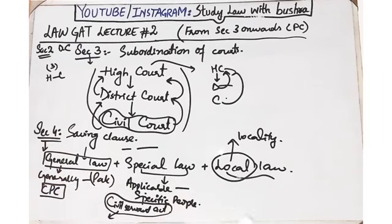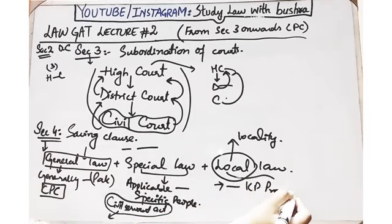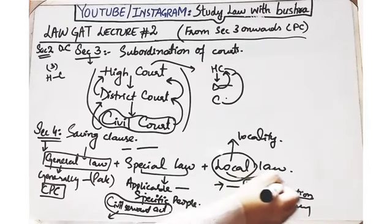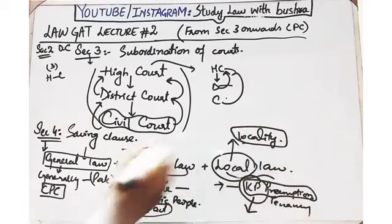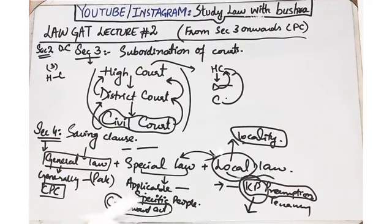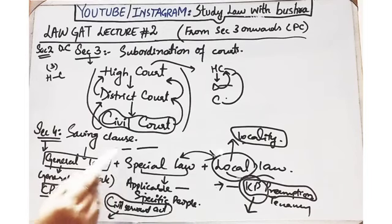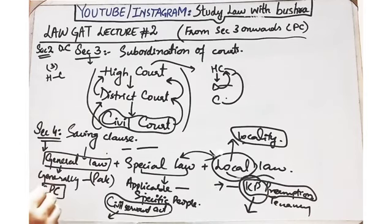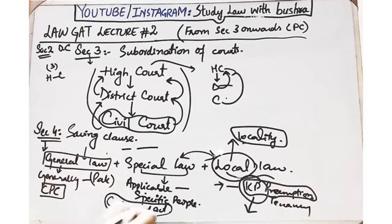Local law नाम से ही ज़ाहिर है — locality से निकला है। कोई ऐसा law जो किसी specific locality या खास इलाक़े पर apply हो रहा हो, वो local law है। For example, KP Preemption Act या KP Tenancy Act — ये खास locality, यानि صرف خیبر پختونخوا میں apply ہوتا ہے۔ Section 4 کا نتیجہ یہ ہے کہ local اور special law کی importance زیادہ ہے اور یہ ہمیشہ general law کو supersede کرتے ہیں — as per Section 4 of Civil Procedure Code 1908.